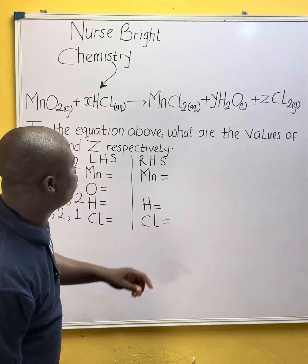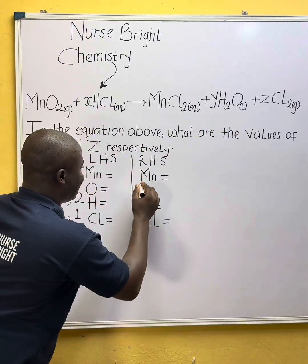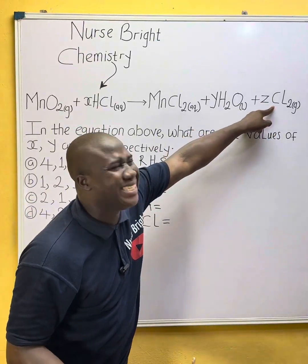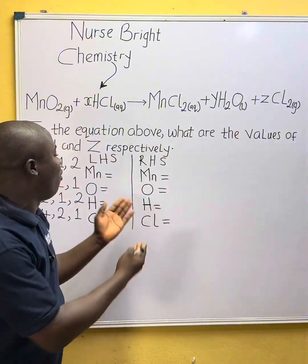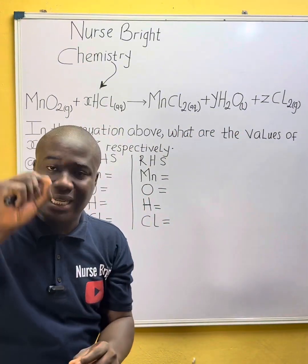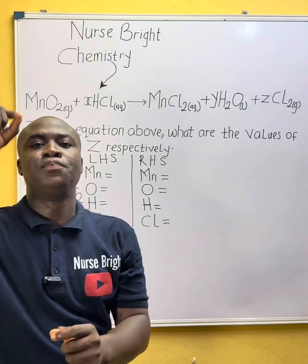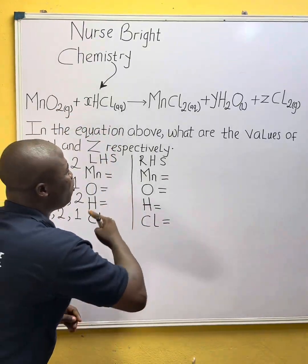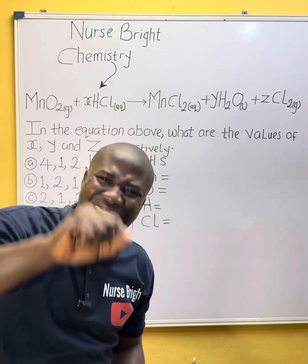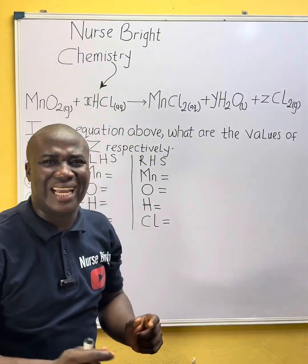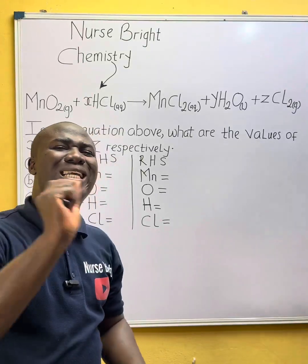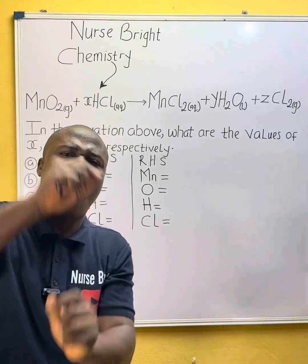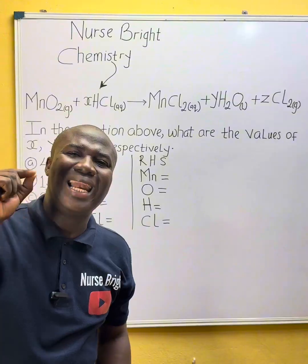The next element I'm seeing is O — oxygen. At the end I also saw Z, which they want me to determine, and Cl — there is no need to write Cl again because we've written it already. We are going to balance everything. When balancing a chemical reaction, you want to ensure that the number of atoms of each element on the right-hand side equals the number on the left-hand side. The next step is to write out the number of each element before balancing the reaction.